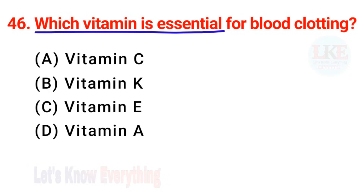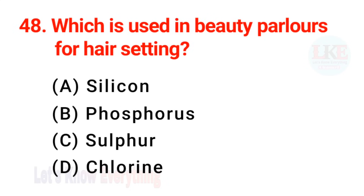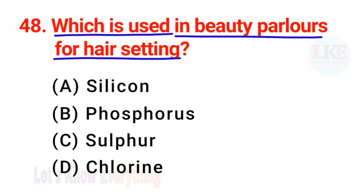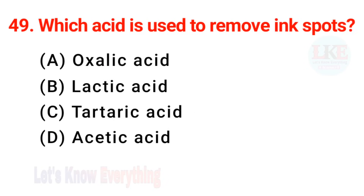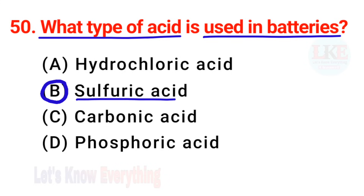Question number 46: which vitamin is essential for blood clotting? Right answer — vitamin K. Question number 47: name the protein present in hair. Right answer option A — keratin. Question number 48: which is used in beauty parlors for hair setting? Right answer — sulfur. Question number 49: which acid is used to remove ink spots? Right answer option A — oxalic acid. Question number 50: what type of acid is used in batteries? Right answer option B — sulfuric acid, H2SO4.